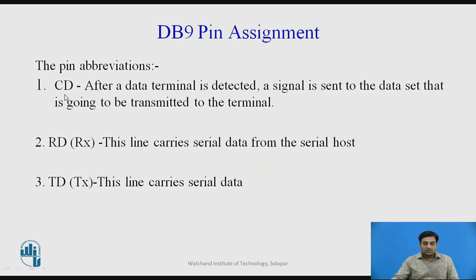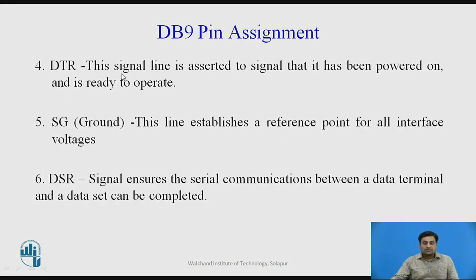Pin 1 is the Carrier Detector. After a data terminal is detected, a signal is sent to the data set to be transmitted. Pin 2 is Receive Data, which carries the serial data from the serial host. Pin 3 is Transmit Data. Pin 4 is Data Terminal Ready (DTR), which is asserted — meaning at high voltage — when the device is powered on and ready to operate.